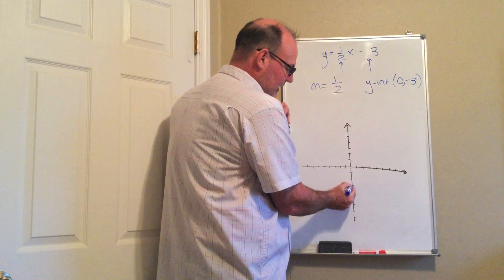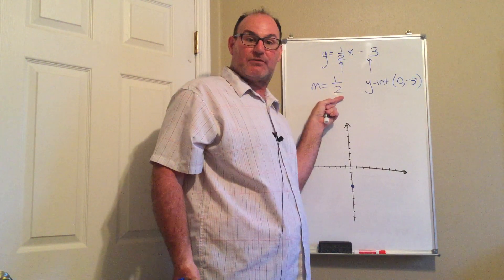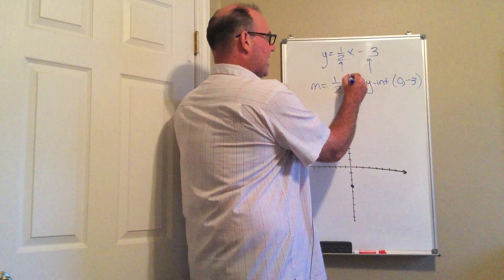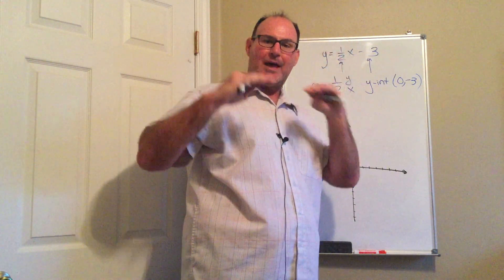The y-intercept negative 3 is right here and now the slope is the rate of change of the line. It's the ratio between the change in the y over the change in the x. It's always y on top, x on the bottom.